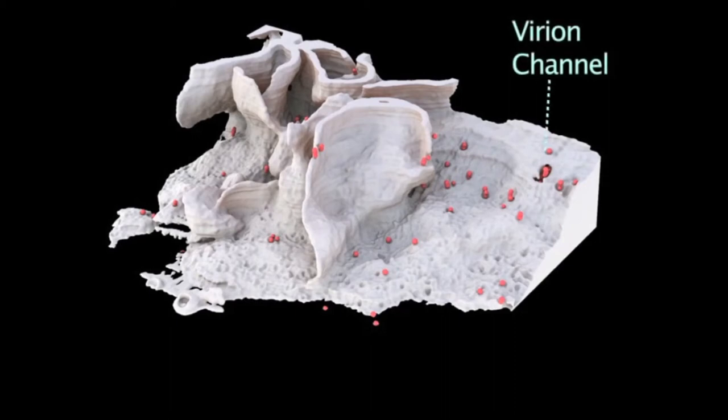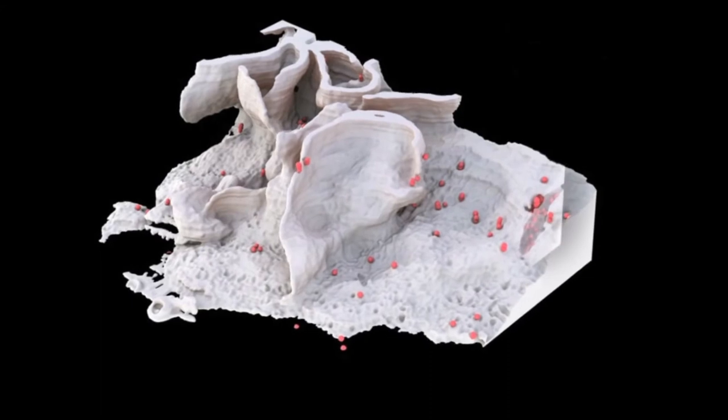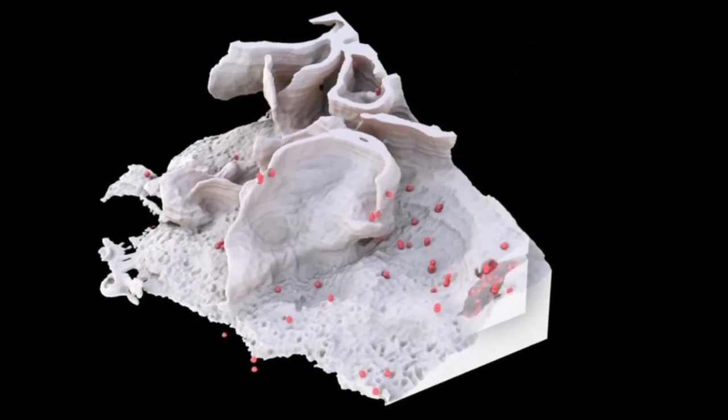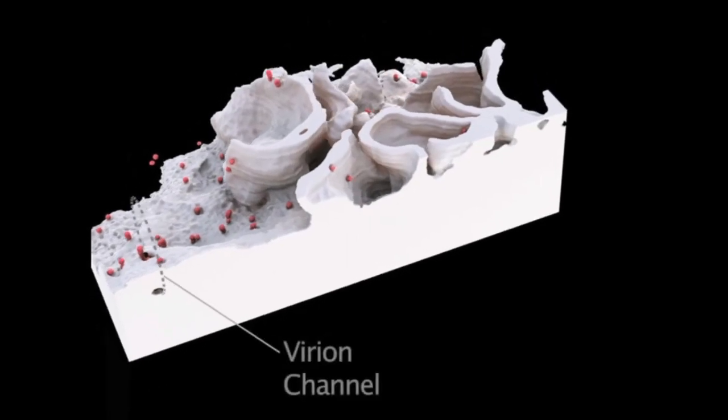The application of FIB-SEM and electron tomography to cell-cell contacts has revealed further new information about the 3D cellular architecture of virological synapses.